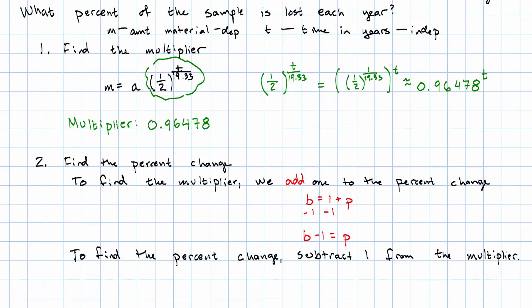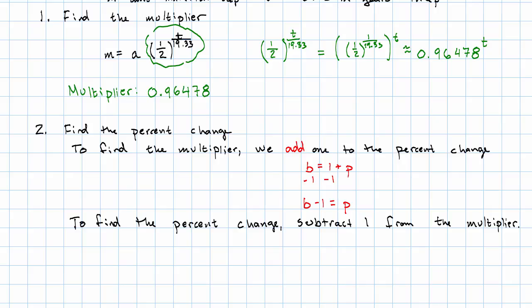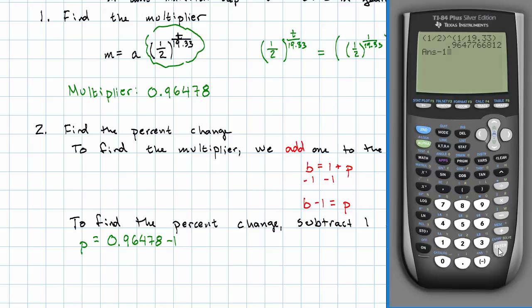To find the percent change, we just subtract one from the multiplier. So we'll have our percent change is 0.96478 minus one. I'm just going to use the number I have in my calculator, negative 0.3522.